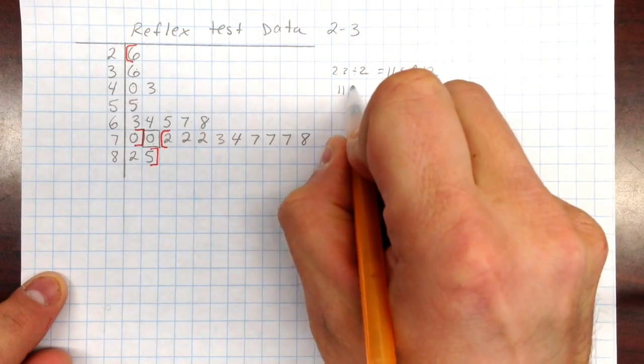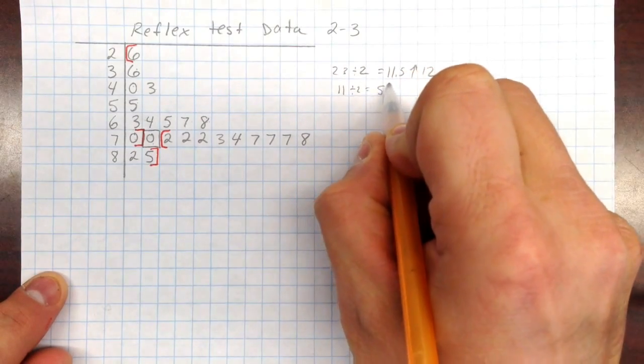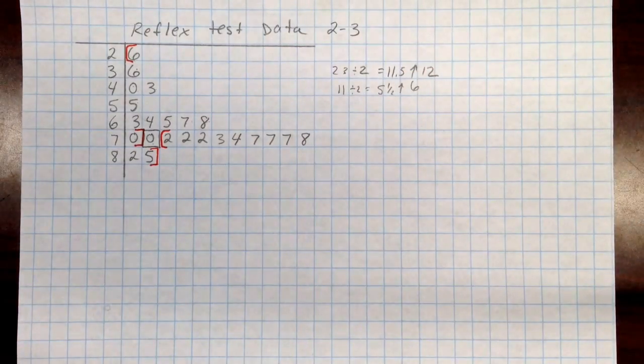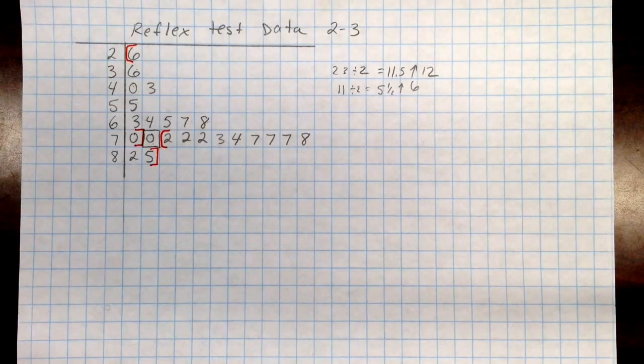And if we take 11 again, divide by 2, that's 5.5, rounded up to 6. In this case we have two sets of odd numbers, so it works out well. This is a middle number in each case then.